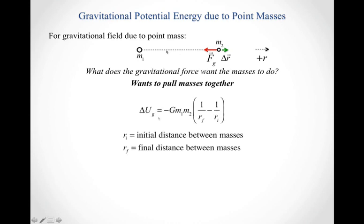I can calculate how the gravitational potential energy changes with this equation. The change in gravitational potential energy is equal to negative big G times mass 1 times mass 2 times the term in parentheses: 1 over R_F minus 1 over R_I, where R_I is the initial distance between your masses and R_F is the final distance between your masses.